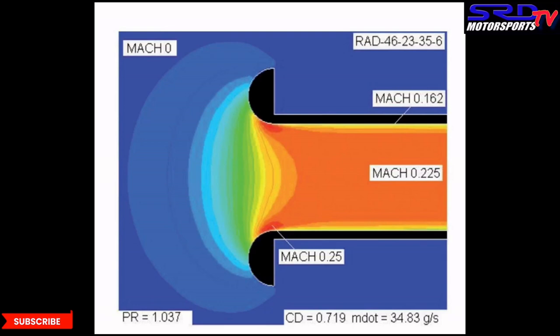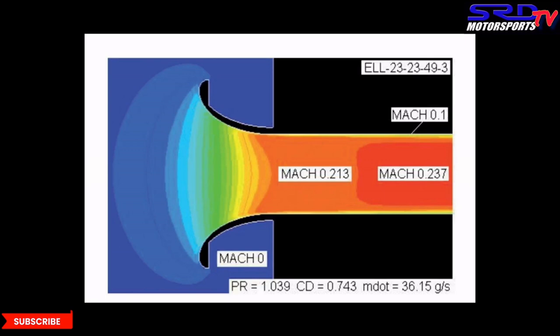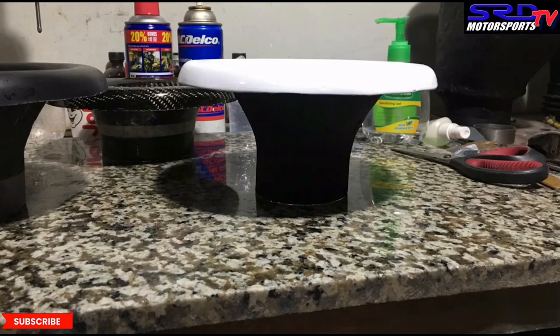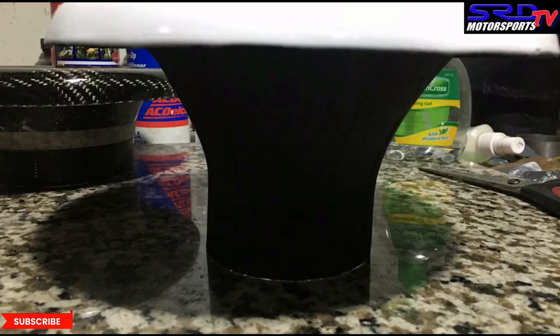Going back to Gordon P. Blair's study — the simple radius entry is Mach 0.225. On his elliptical radius profile, it's Mach 0.237. So it's faster for the same amount of losses, meaning it's more efficient. That is why we made this. For the 3-inch on ambient air or enclosed surfaces like the dyno, this is going to be way more efficient.